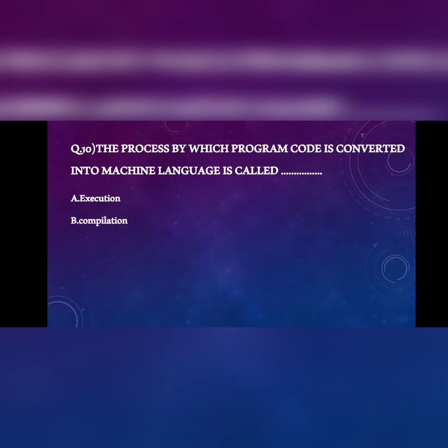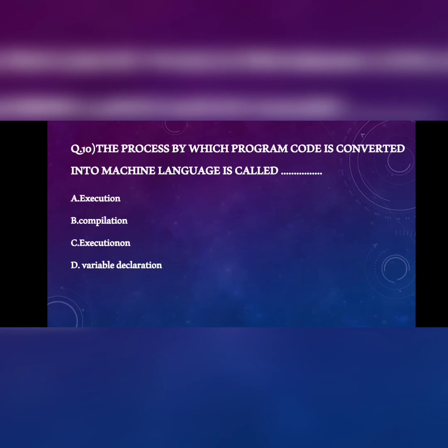Question 10: the process by which program code is converted into machine language is called A) execution, B) compilation, C) execution, D) variable declaration. In compilation, whatever program code is written is converted into machine language. The answer is B, compilation.